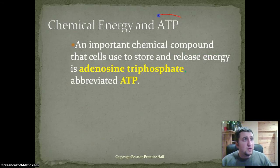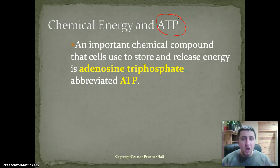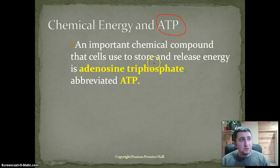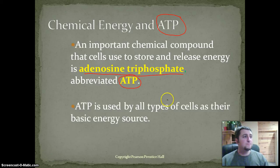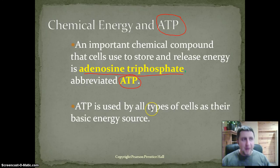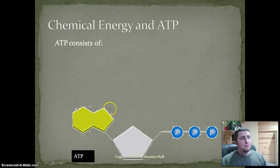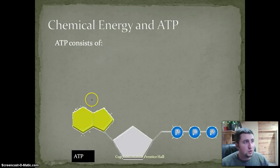ATP is the energy molecule of our cells. It is an important chemical compound that cells use to store and release energy. It's scientifically known as adenosine triphosphate, which is abbreviated ATP. ATP is used by all cell types as their basic energy source. Let's investigate what ATP actually is in a little bit more detail.